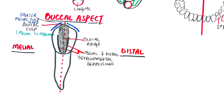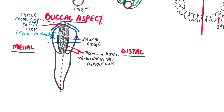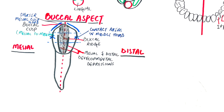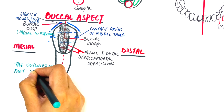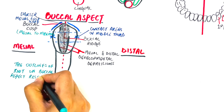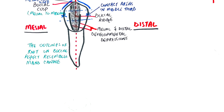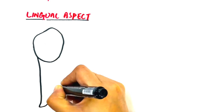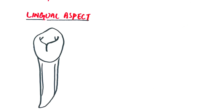The mesial and distal contact areas are located in the middle third. The mesial and distal outlines are slightly concave from the cervical line up to the contact areas. The cervical line is convex towards the root, and the buccal outline of the root almost resembles that of the mandibular canine. From the lingual aspect, the outlines are almost the same as the buccal aspect, with both the small underdeveloped lingual cusp and the large buccal cusp visible.